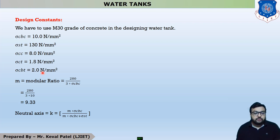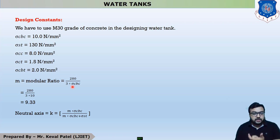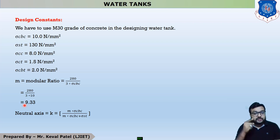Next we are discussing the modular ratio. The equation of modular ratio is always constant: 280 divided by 3 into σCBC, where 280 and 3 are constants and σCBC is the permissible stress in concrete due to bending in compression. The value of σCBC as per IS codal provisions is 10, so putting that value we get our modular ratio as 9.33. This modular ratio design constant is very important while calculating the design of water tank.